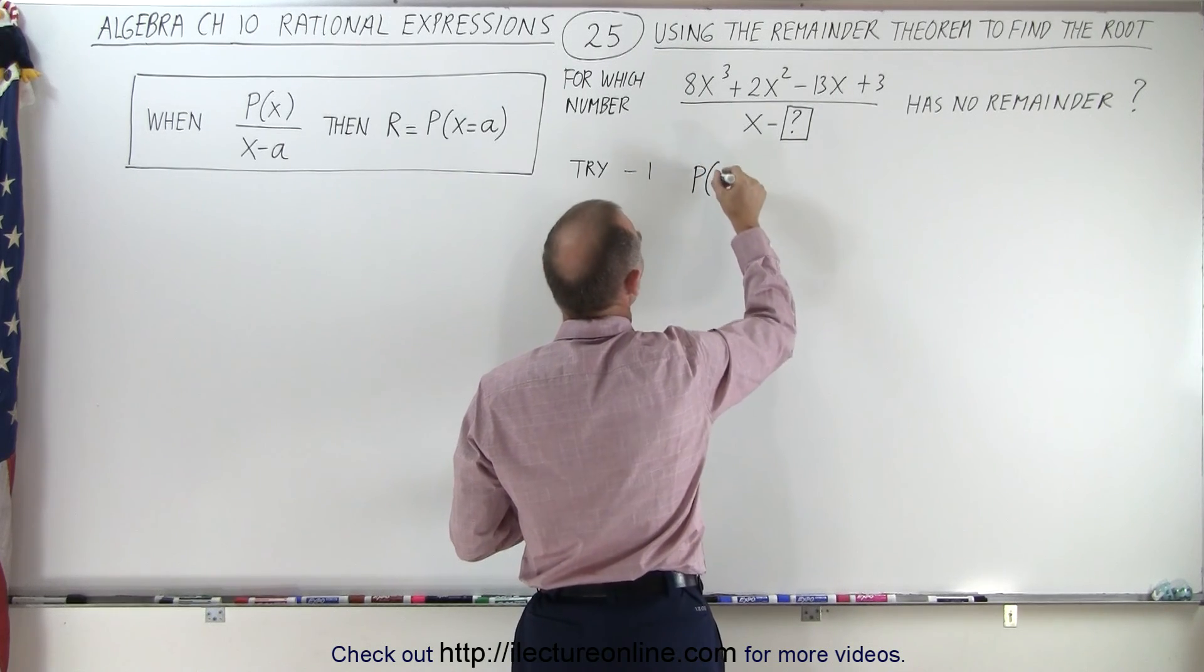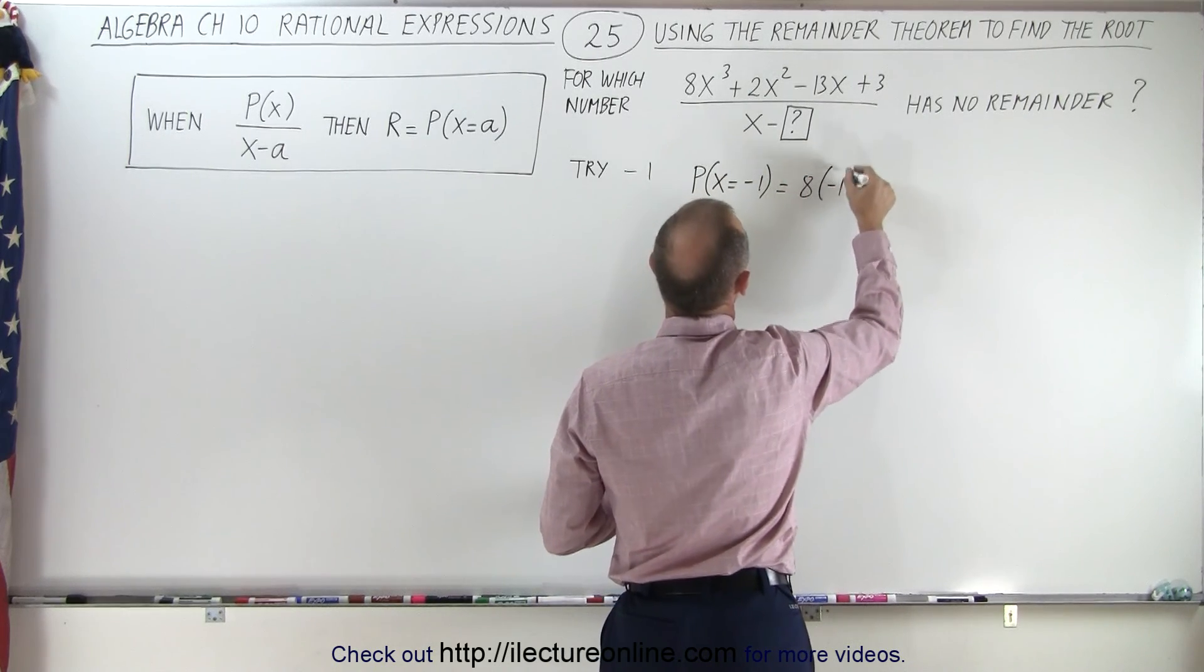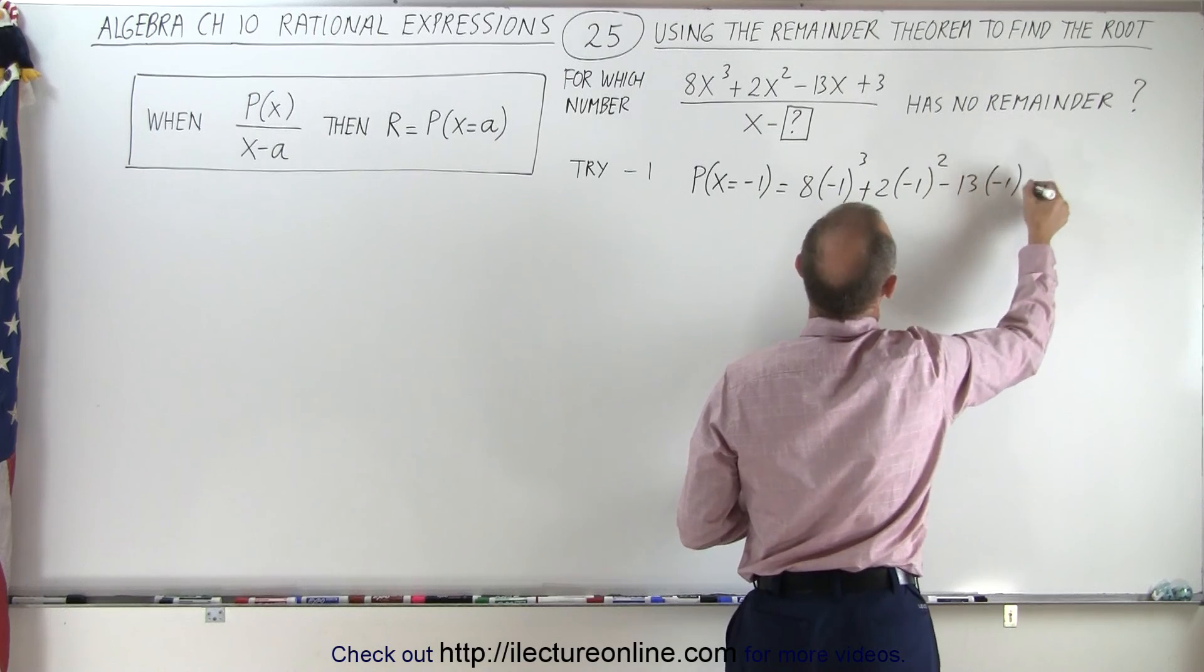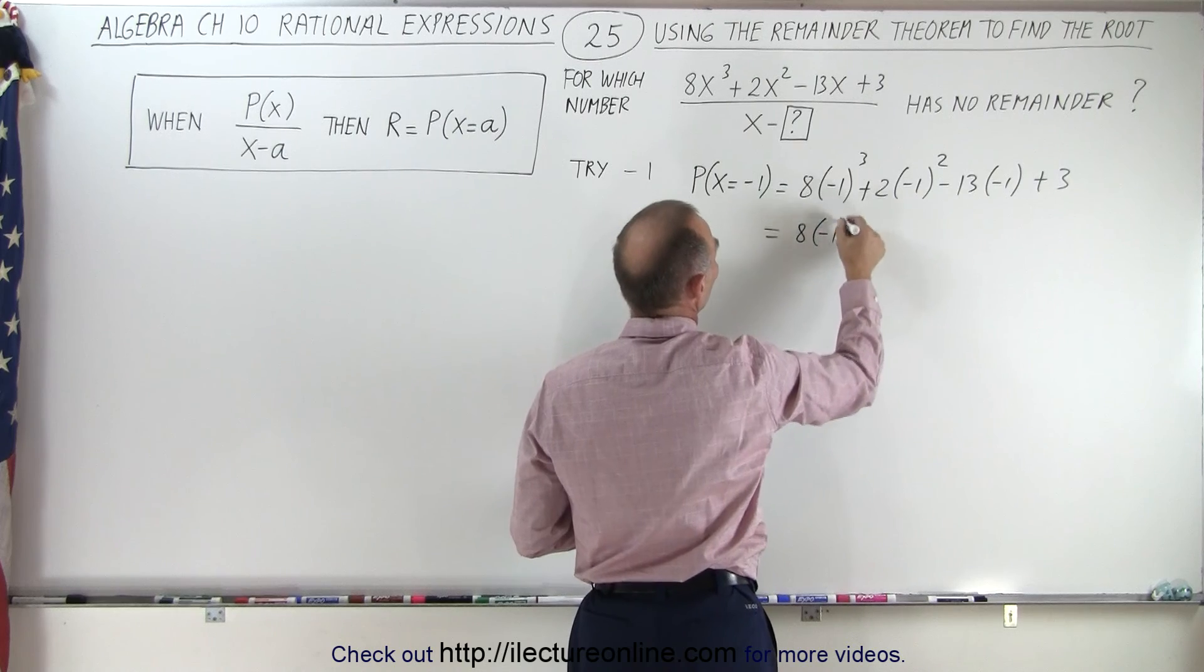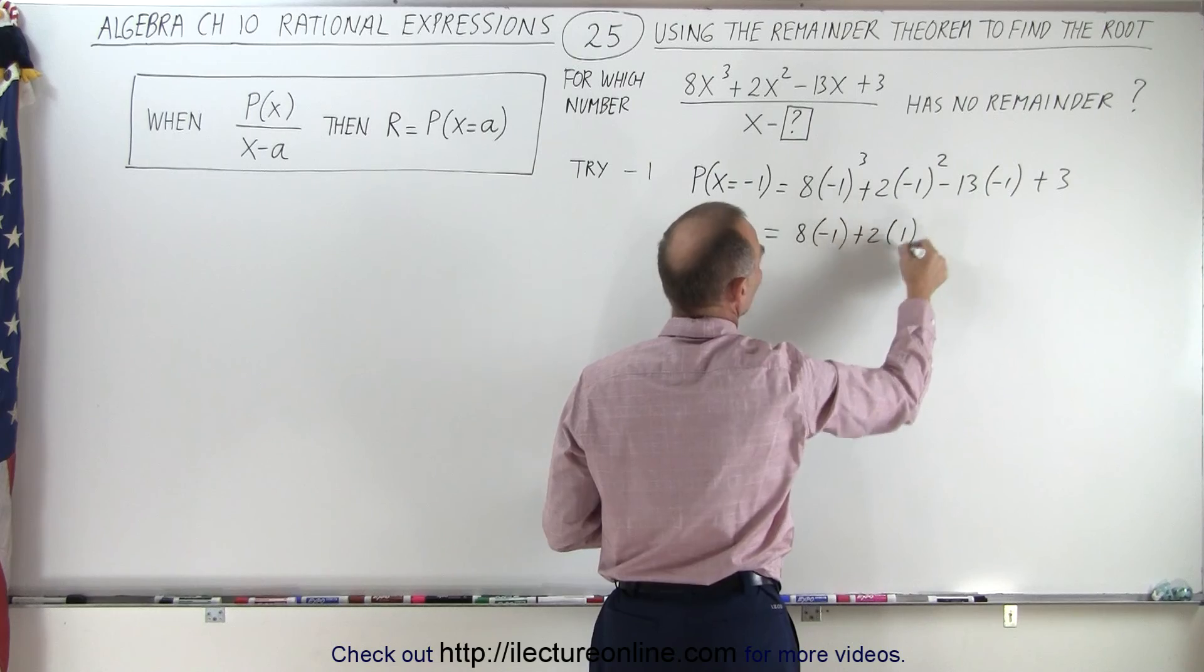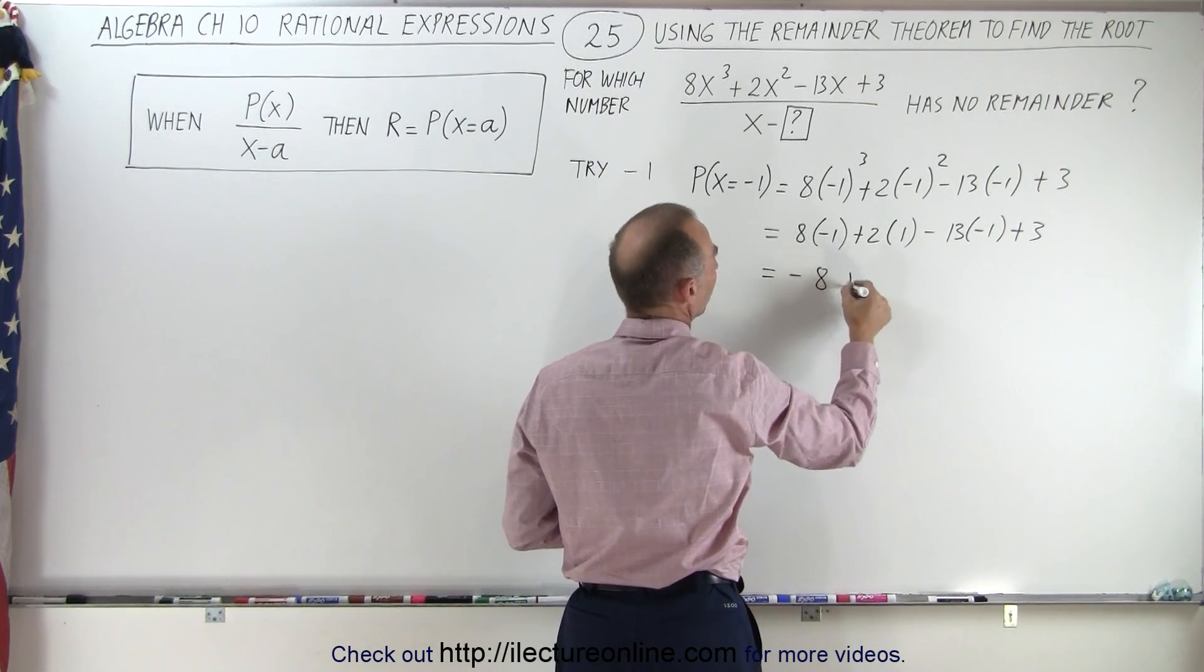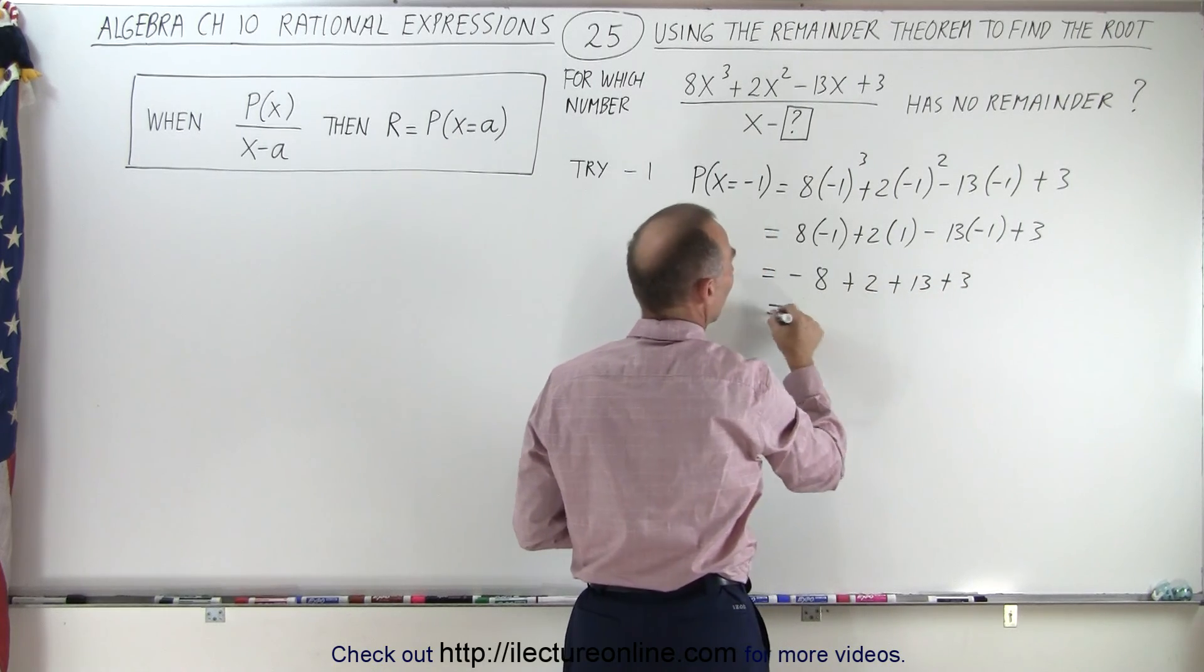So the numerator, the polynomial, evaluated at x equals negative 1 is equal to 8 times negative 1 cubed plus 2 times negative 1 squared minus 13 times negative 1 plus 3. So this is equal to 8 times negative 1 because negative 1 cubed is negative 1 plus 2 times negative 1 squared which is a positive 1 minus 13 times negative 1 plus 3.